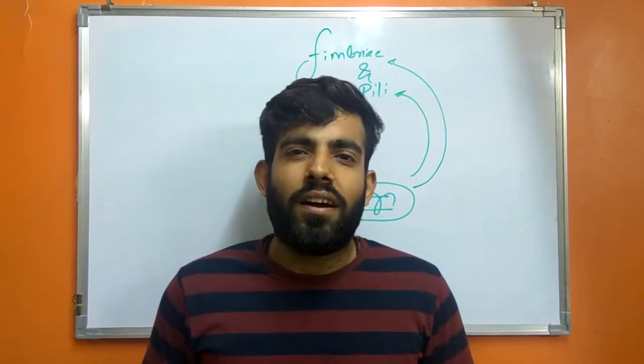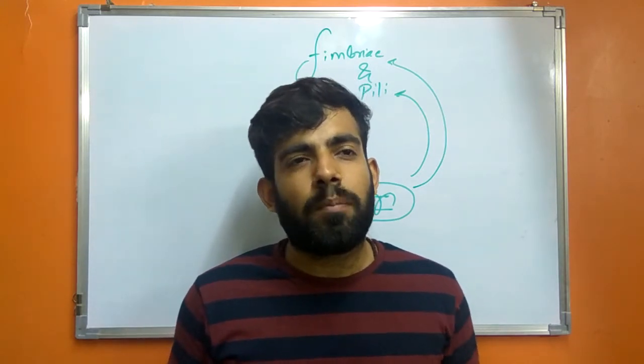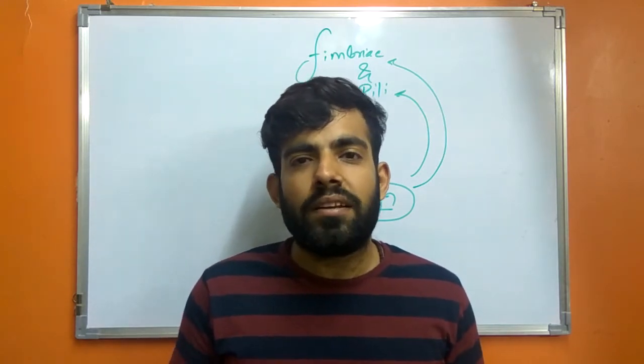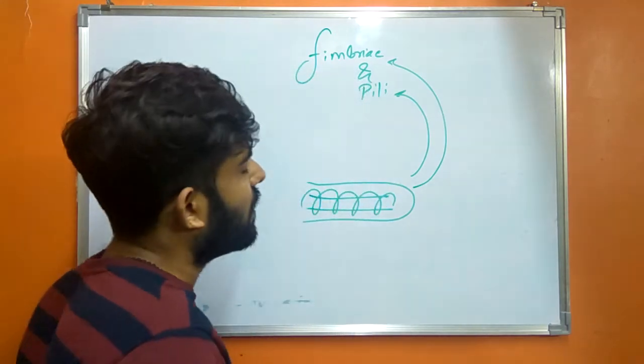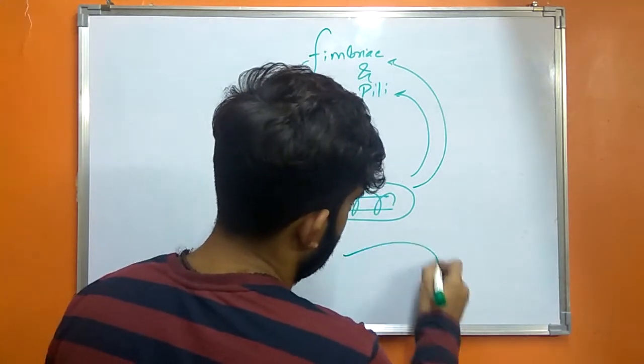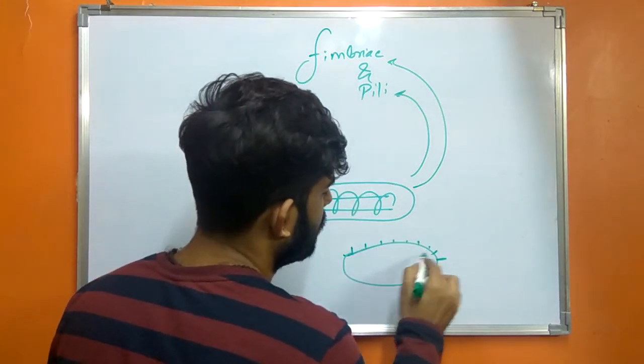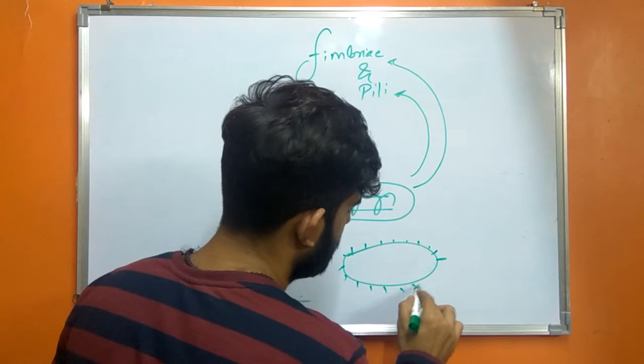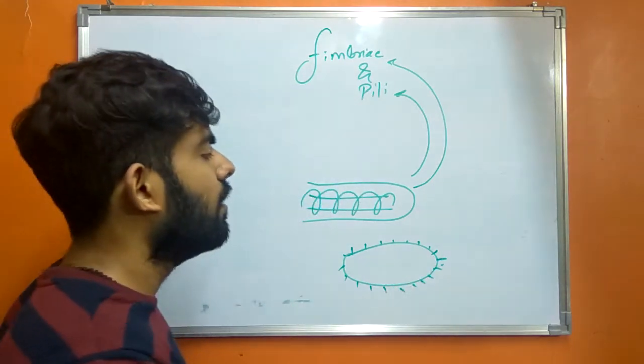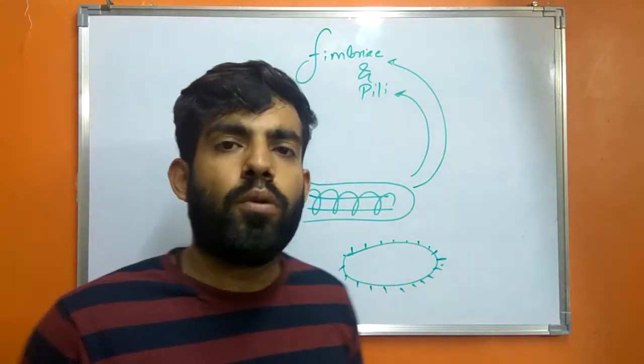So first of all, if I talk about Fimbria, Fimbria are made up of pilin. They may be present at a pole, or present throughout the surface. The range may vary from few to hundred.